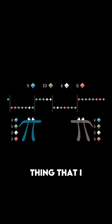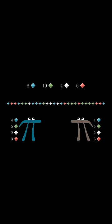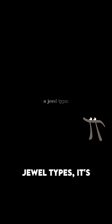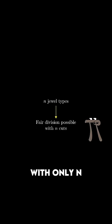The claim, the thing that I want to prove in this video, is that if there are N different jewel types, it's always possible to do this fair division with only N cuts, or fewer.